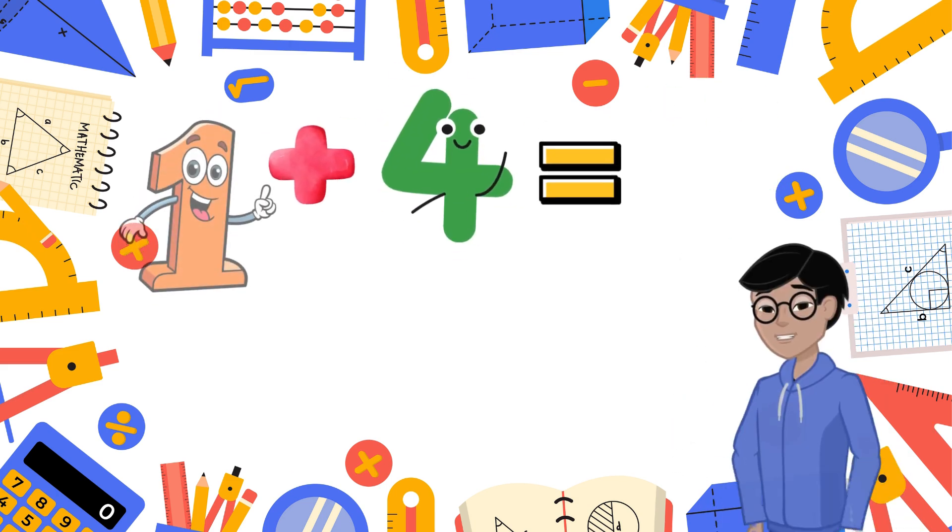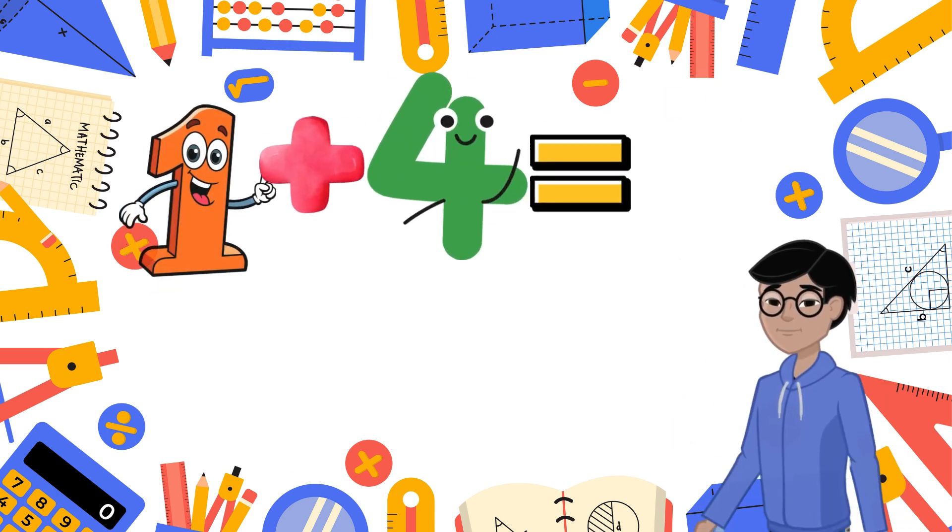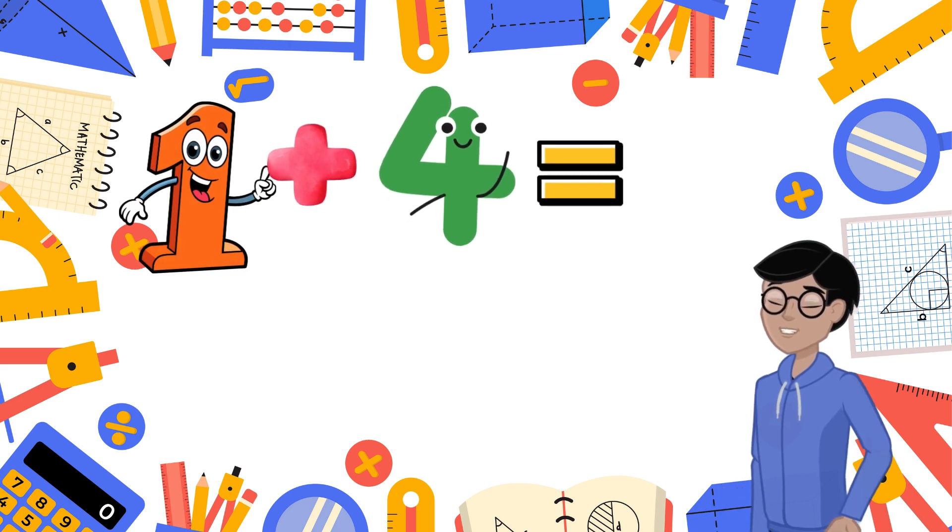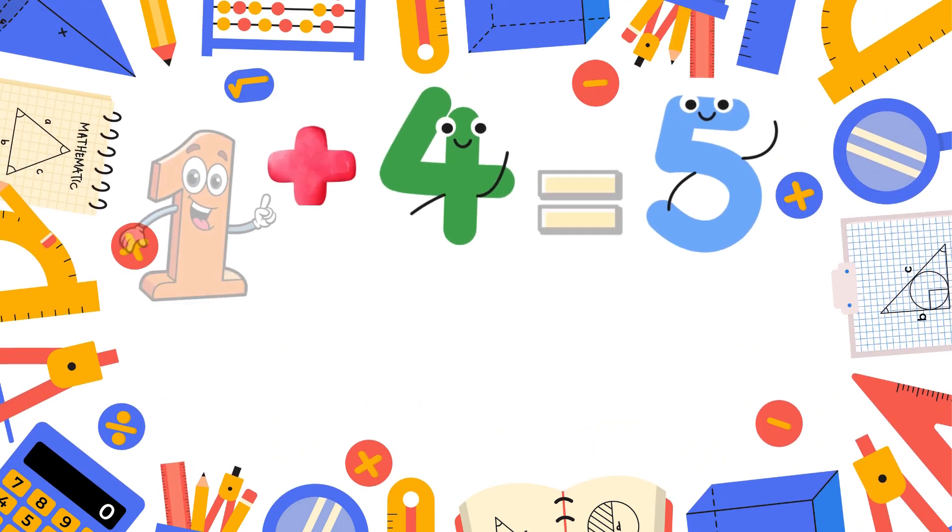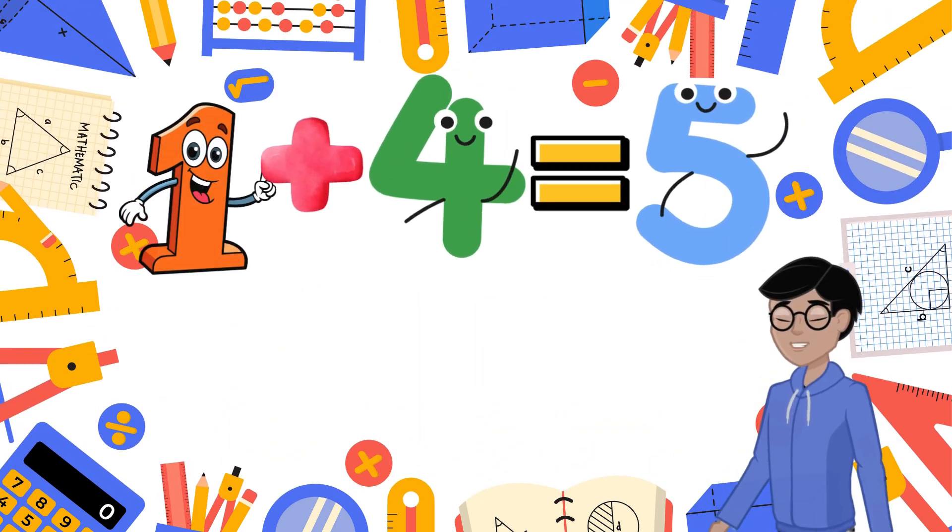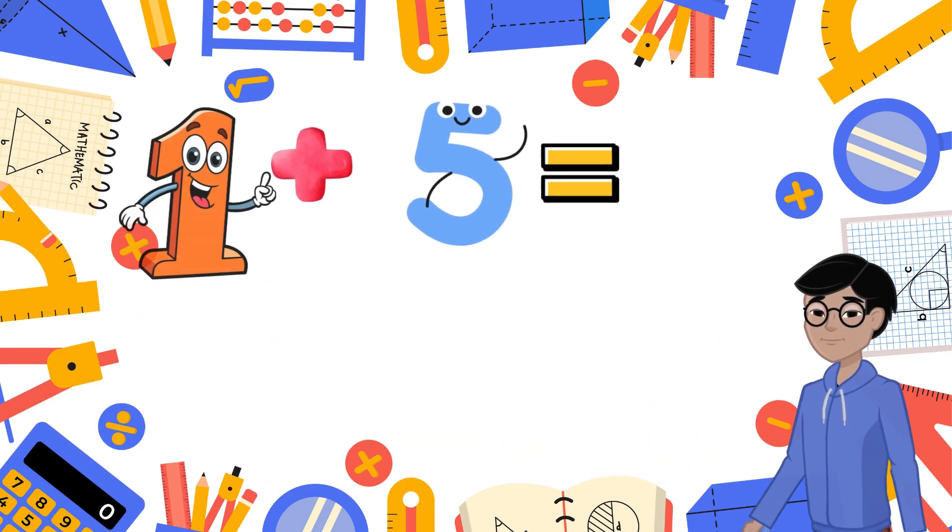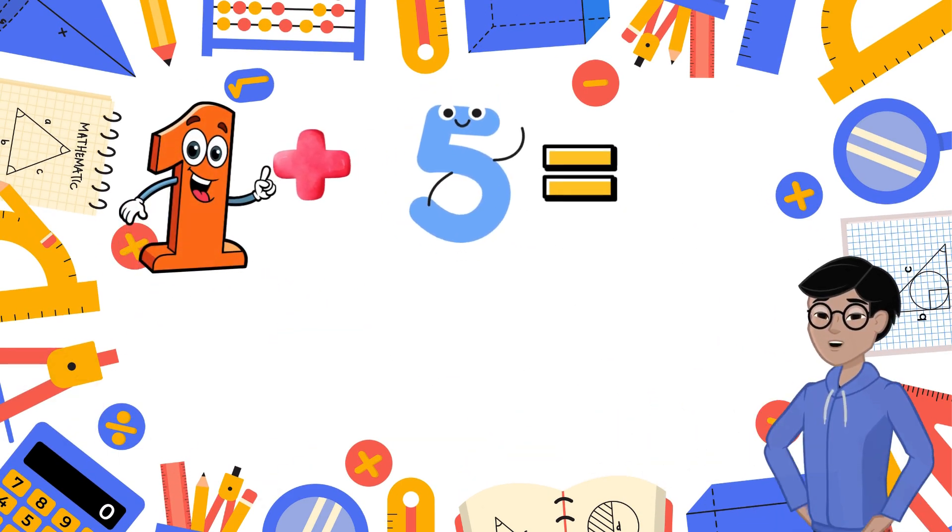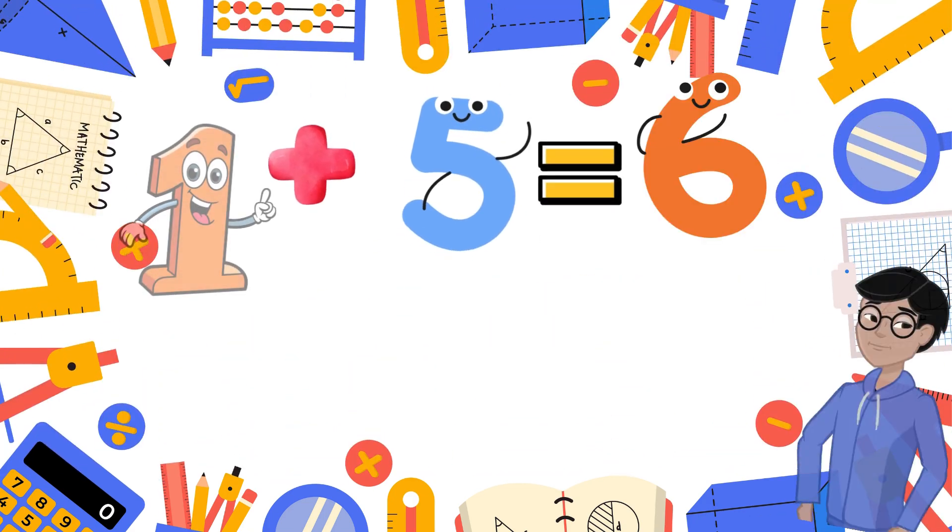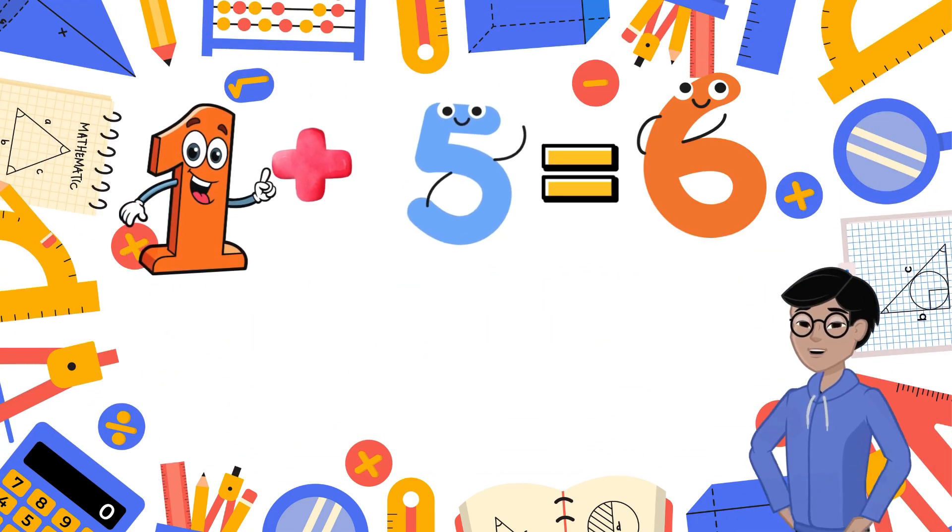Next, we have 1 plus 4. Let's see who is going to solve it quickly. The answer is 5. Next, we have 1 plus 5. Let's see who is going to solve it quickly. The answer is 6.